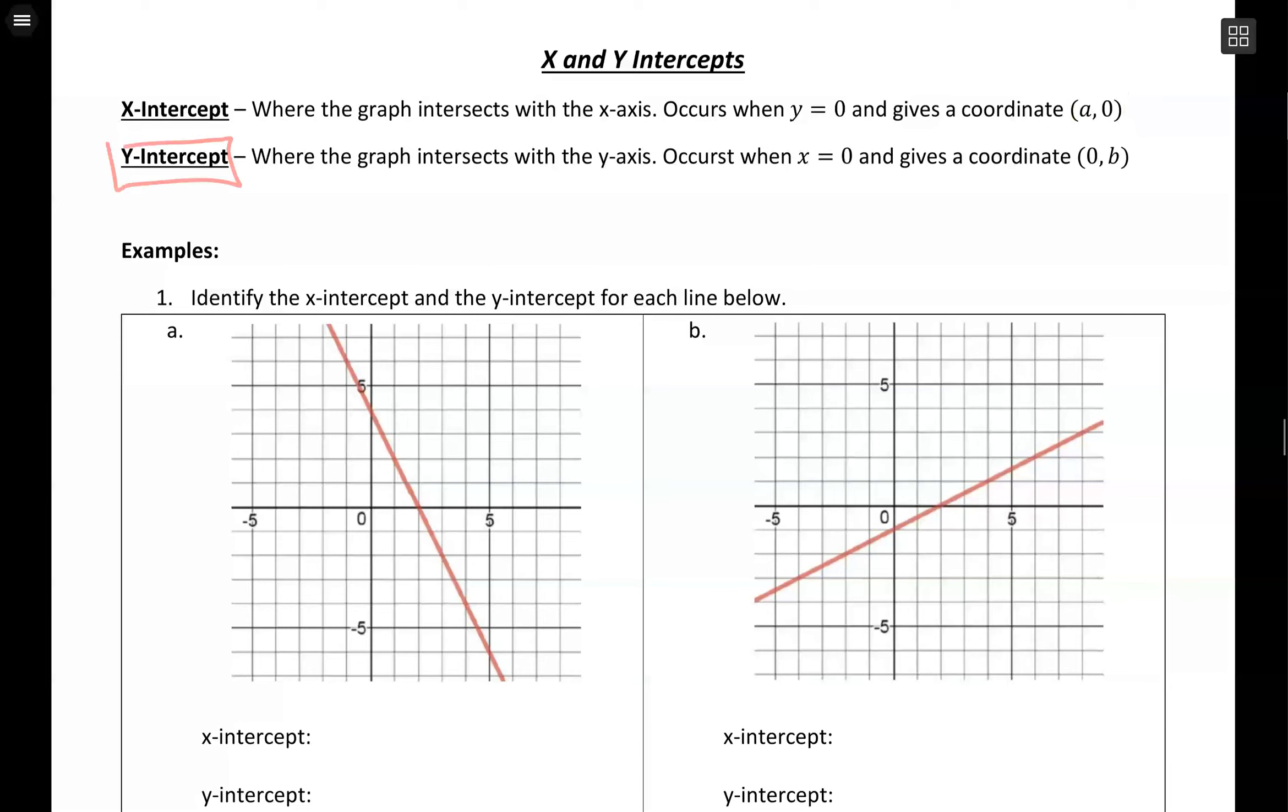Then similarly with the y-intercept, that's where we intersect the y-axis. And that occurs when x is equal to 0, and we give that by the coordinate where x is 0 and then y is a number.